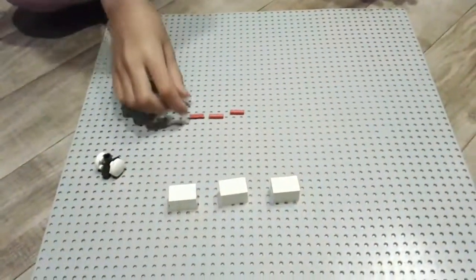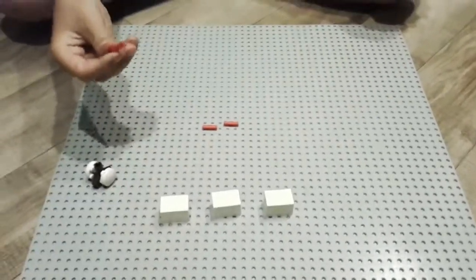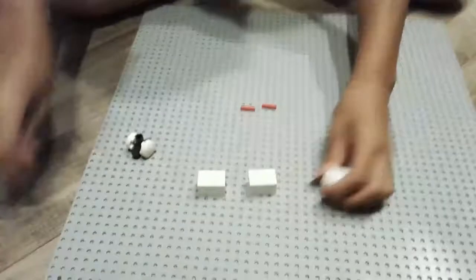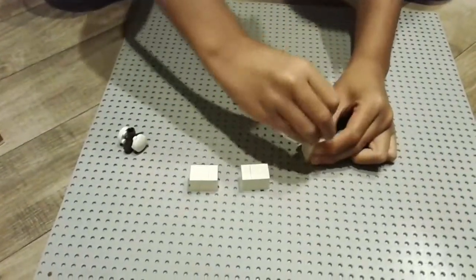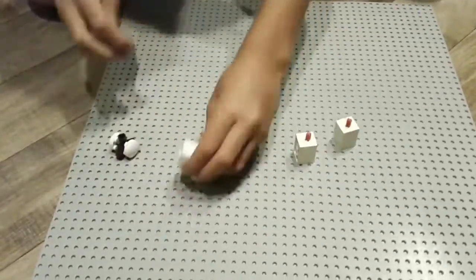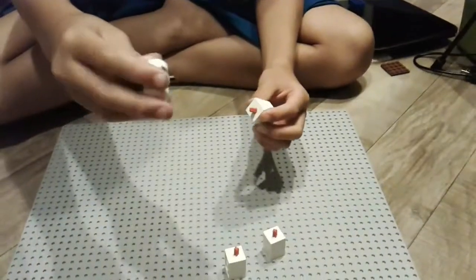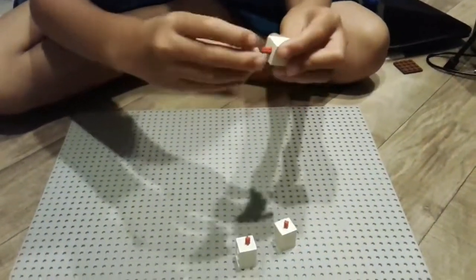Then get two two by one axles and just put them all in like that. So then get this piece that you made earlier and just snap them in.